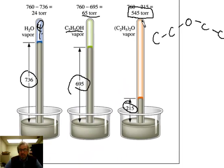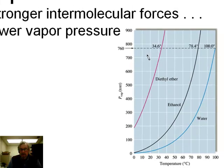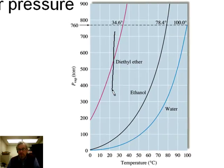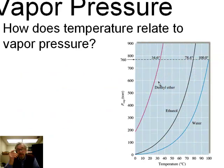A graph of vapor pressure versus temperature for these three substances confirms the pattern: at any given temperature, water has the lowest vapor pressure, then ethanol, then diethyl ether the highest. Temperature and vapor pressure are positively correlated for all liquids — higher temperature means higher equilibrium vapor pressure. However, it's not a linear relationship; we'll address the mathematical details in a later video.